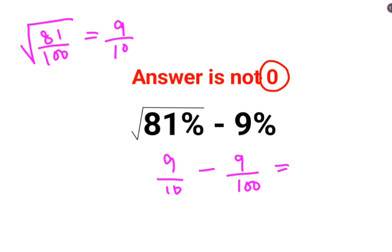Here I need to convert the denominators into the same format. 100 comes in 10's table, so you can convert this denominator to 100 by multiplying the numerator and denominator by 10. So you will have 90 upon 100 minus 9 upon 100.